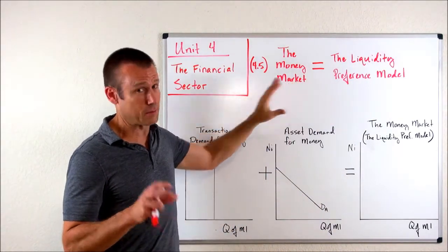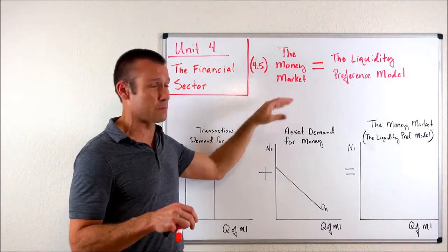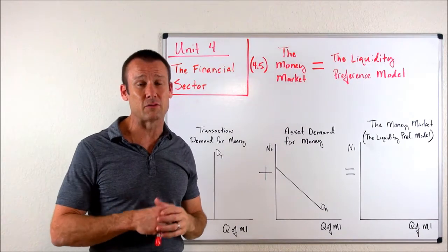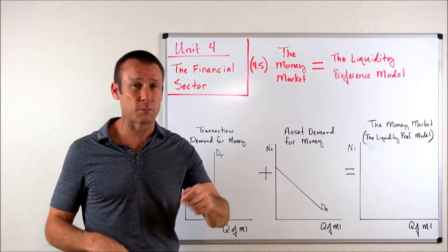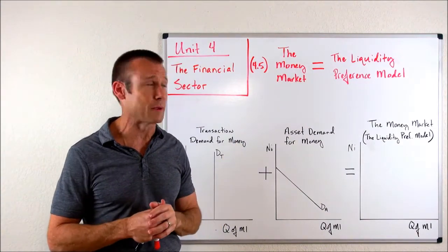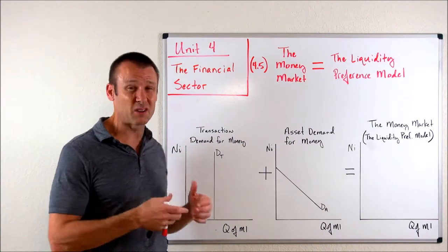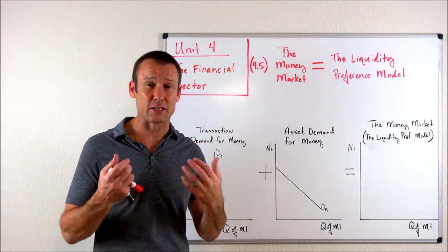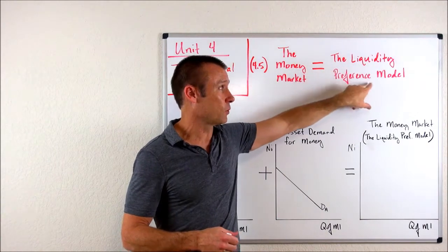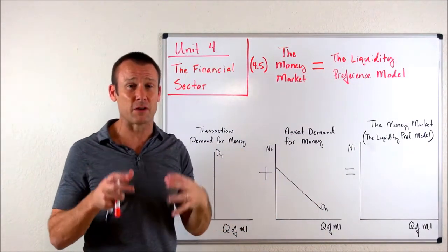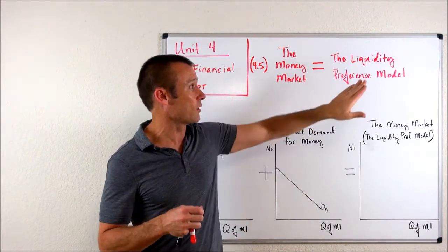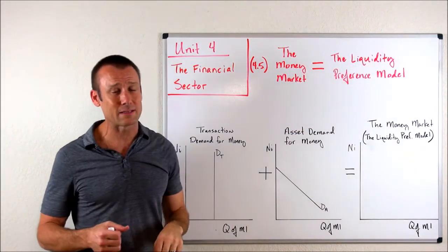I don't love the name 'money market,' even though it is more common. Why? Because it's different than any other market we have. Our currency markets, loanable funds markets, and product markets — we can see an exchange taking place between the supplier and the demand. However, in this market, you really can't see an exchange taking place in the real world. The name 'liquidity preference model' fits it very well, because this is a model showing our preference for liquid assets.